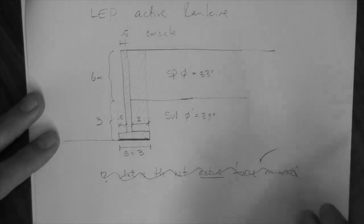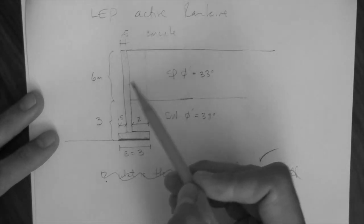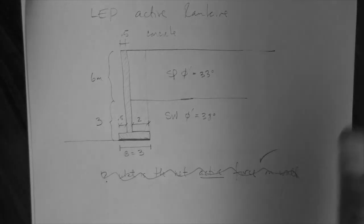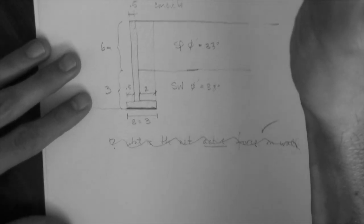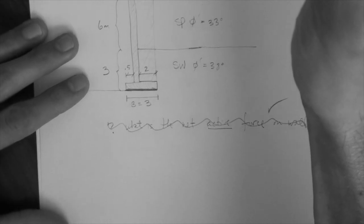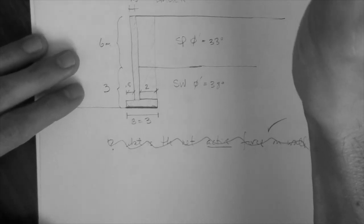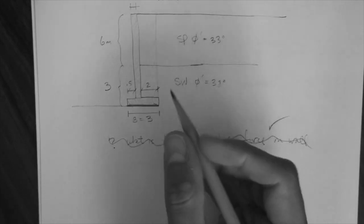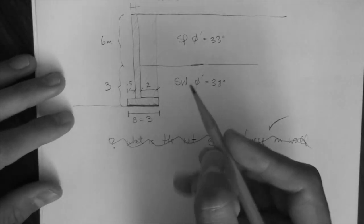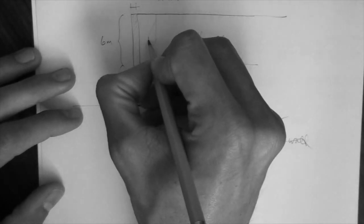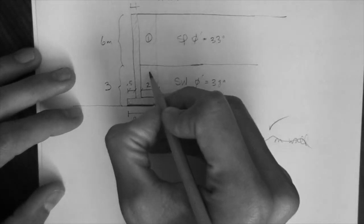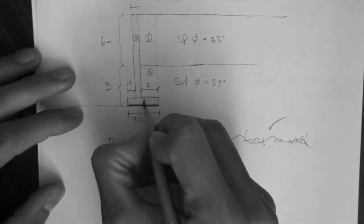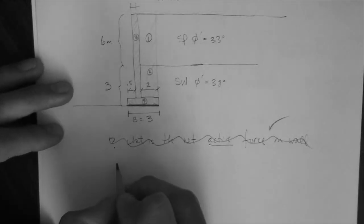So what we do now is calculate all these weights. To calculate weights in a two-dimensional system like this, or problem, what we do is compute areas and multiply those areas times the unit weight. So let me call this area one, area two, area three, area four.